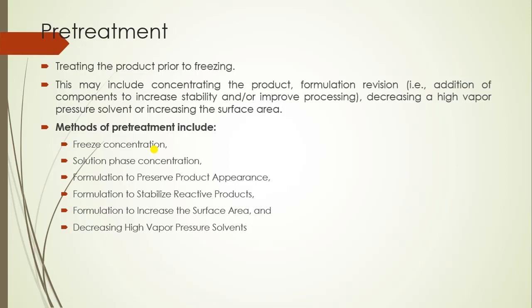Pretreatment will generally improve the product stability, surface area, or texture, or decrease the cycle time for primary and secondary drying. Methods generally include concentration of the solution, freeze concentration, preservation of the product appearance, stabilization of the product, increased surface area, and decreasing the preparation of the solvent. Any addition or removal of substance, or changes in concentration done before freezing, is referred to as pretreatment.